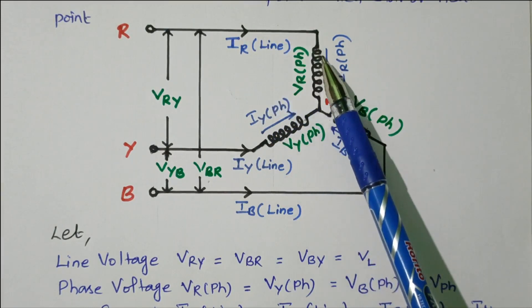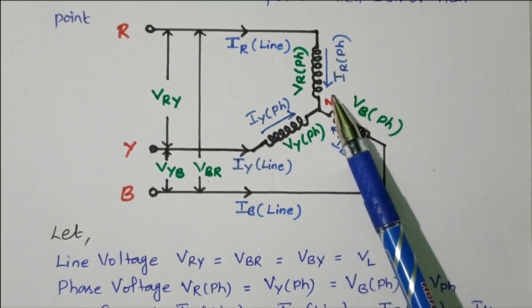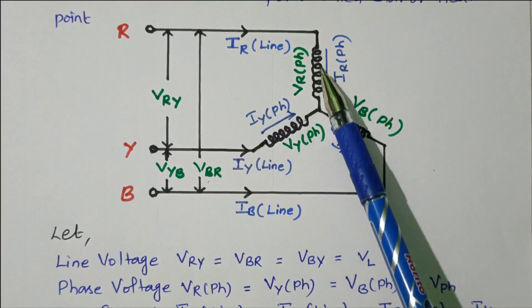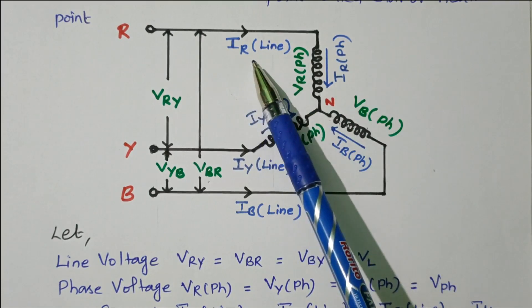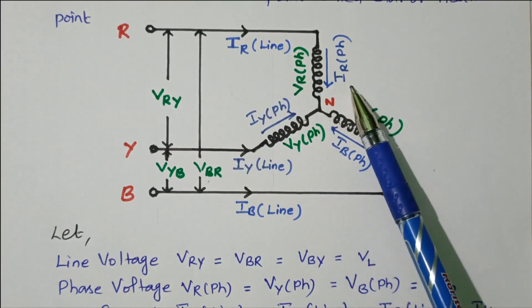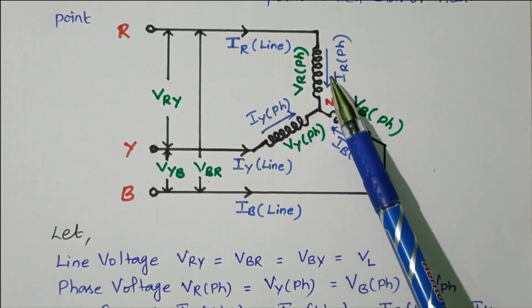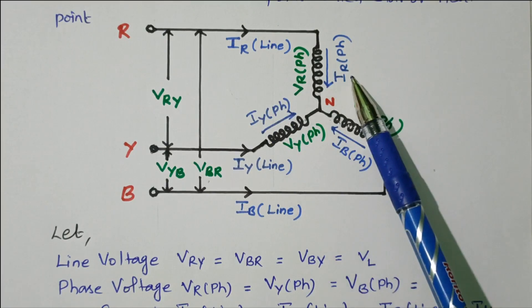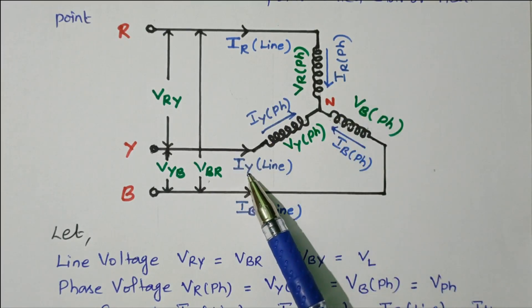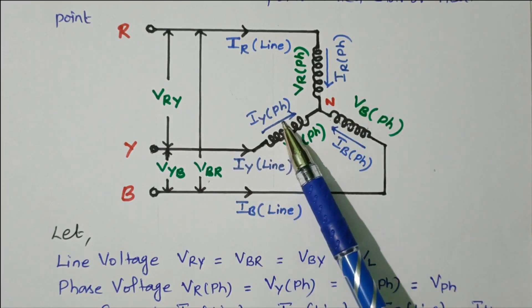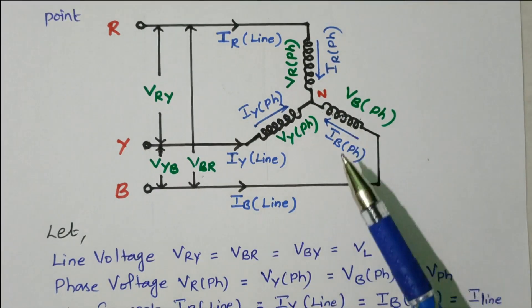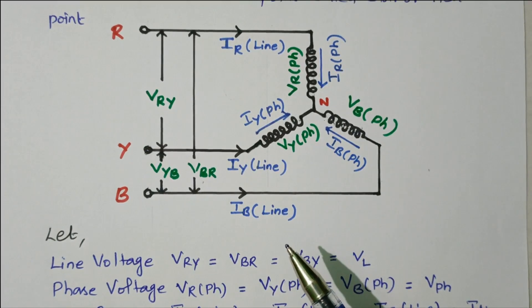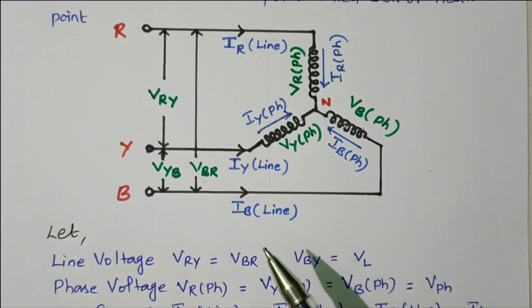This line current is going to the phase, so the phase current is also equal to the line current — line current and phase current are equal. I_R_line is equal to I_R_phase; both the currents are equal. Line current is equal to phase current. Similarly, I_Y_line is equal to I_Y_phase, and I_B_line is equal to I_B_phase. Both the line current and phase currents are equal.